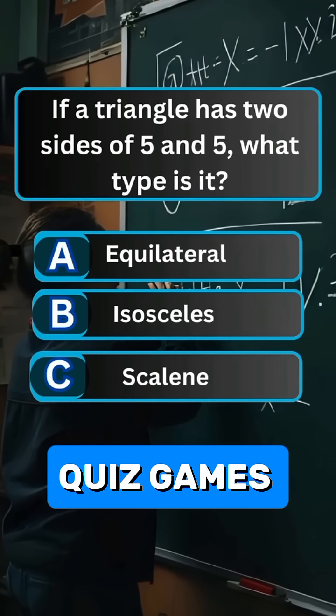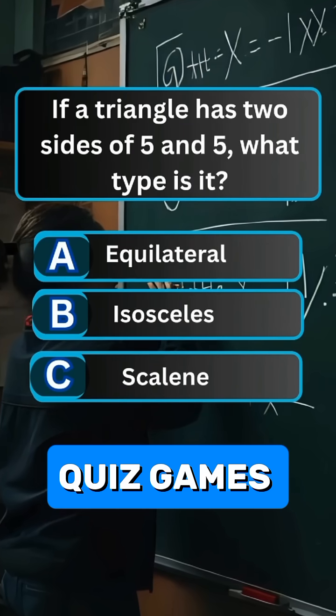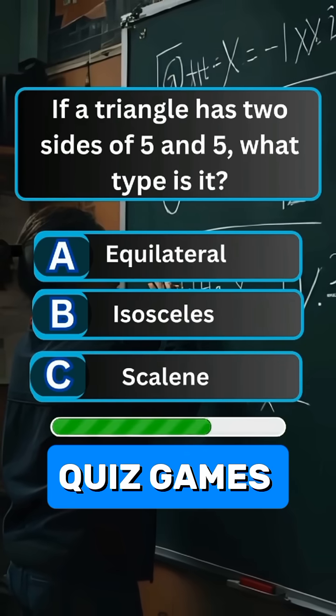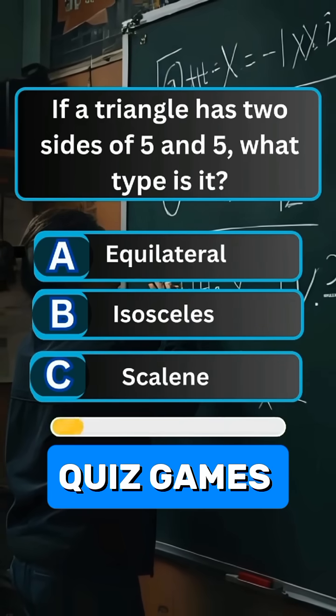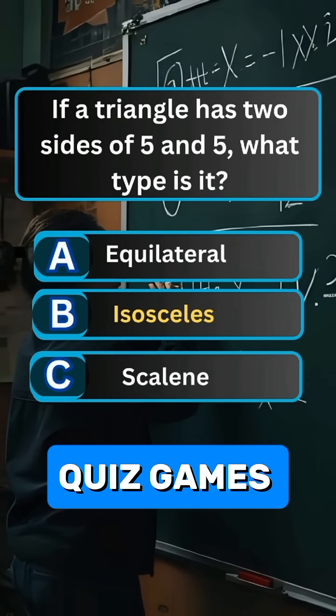Question 2. If a triangle has two sides of 5 and 5, what type is it? Answer B. Isosceles.